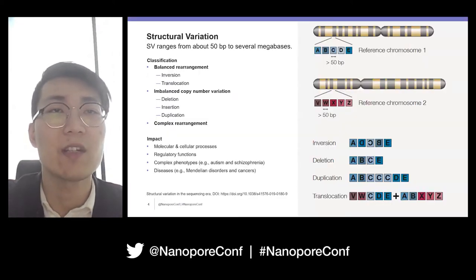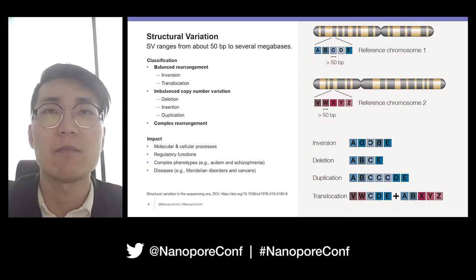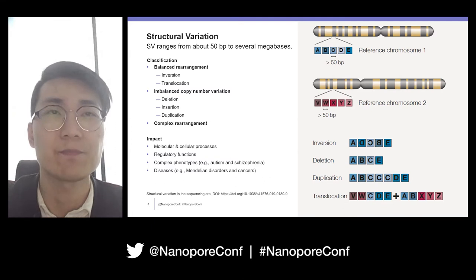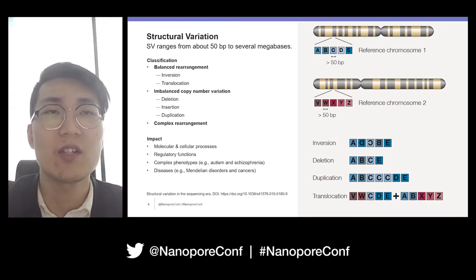Structural variation represents genomic rearrangements on the regions from about 50 bases to several megabases. Structural variation mainly contains three types: balanced rearrangement, imbalanced copy number variation, and complex rearrangement. Balanced structural variation includes inversion and translocation. Copy number variation consists of deletion, insertion, and duplication. When a genomic region is involved in multiple types of structural variation, a complex one will be determined.